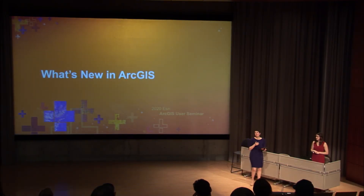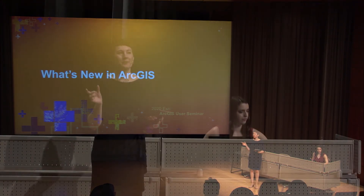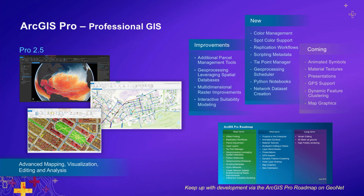Let's dive into the exciting stuff and talk about what's new with ArcGIS. In this next section we're going to be highlighting new capabilities within our existing products, starting with ArcGIS Pro — our go-to desktop application for both 2D and 3D visualization and spatial analytics. We're constantly making improvements including parcel management tools, GPS support, interactive suitability modeling, and more.